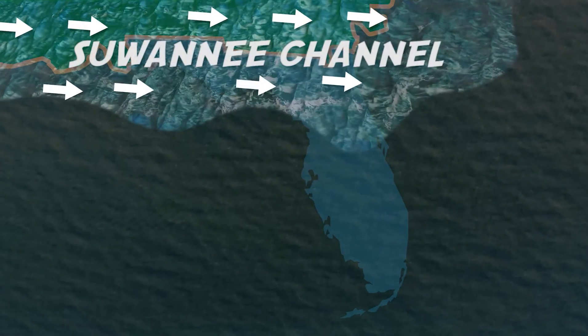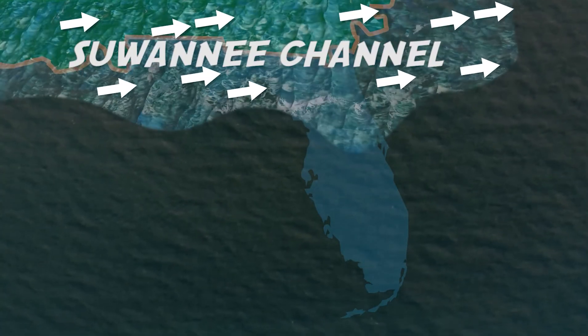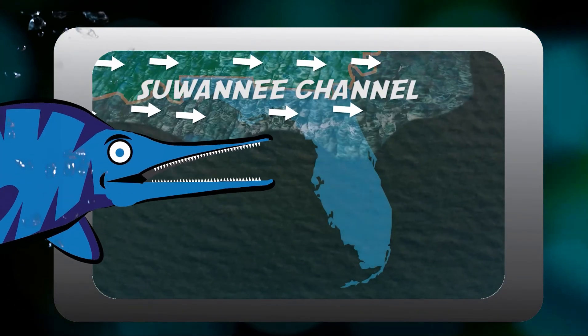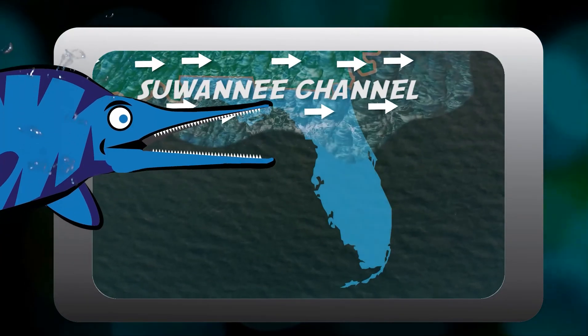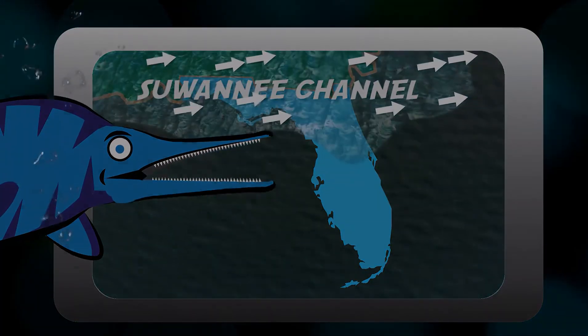Florida would have been much different today if the Suwannee Channel wasn't there. It helped to redirect all of the sediments that were eroding from the Appalachian Mountains. All of these sediments would have covered Florida's tropical sea.